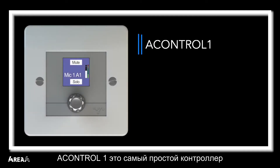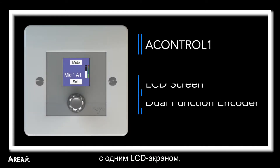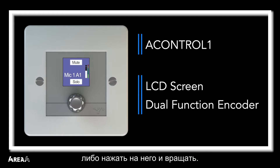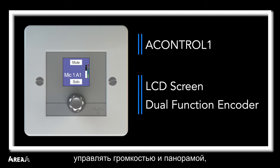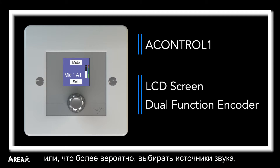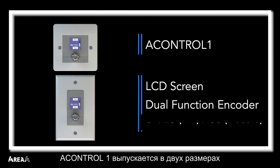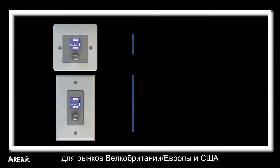The A-Control 1 is a very simple controller with one LCD screen and a dual function encoder, which has one function when you turn the encoder and another when you press and turn it. These two functions are fully assignable by the user, so it could be a volume and a pan, or more likely a source selector, which we'll come back to later on in this video. The A-Control 1 is available in both UK/EU and US sizes.